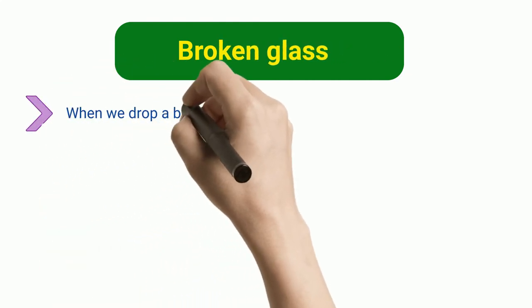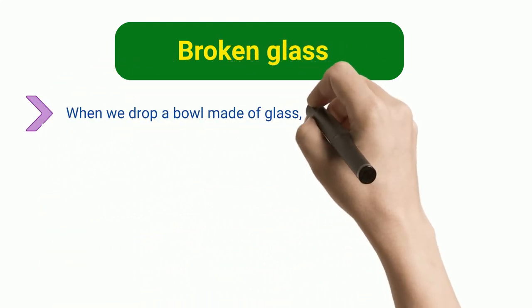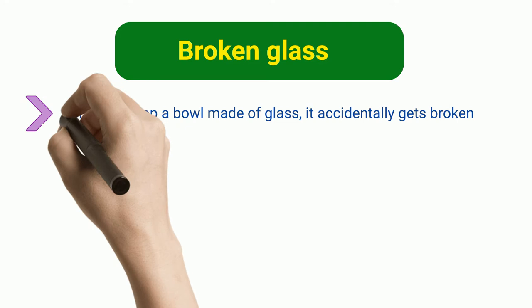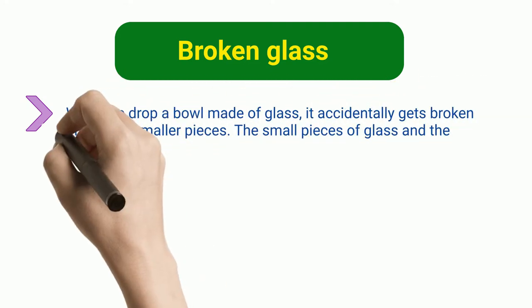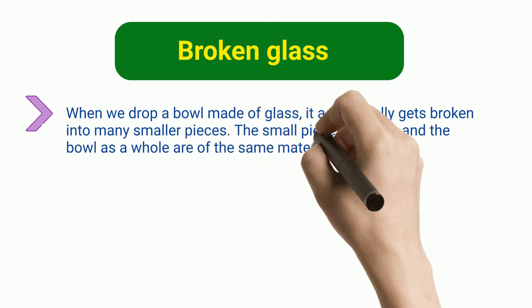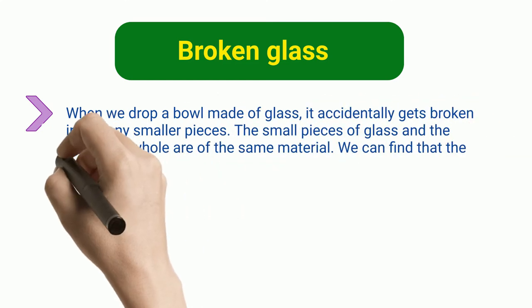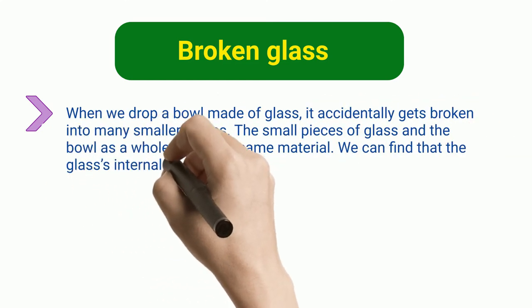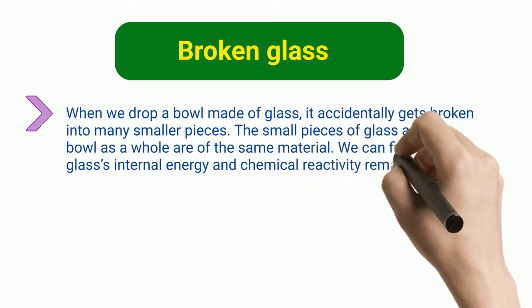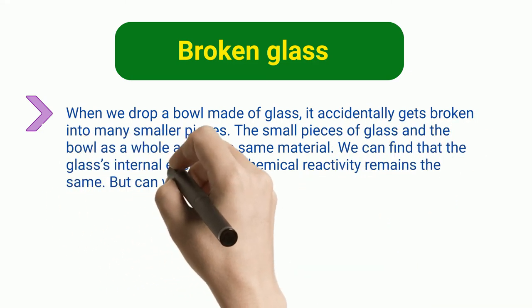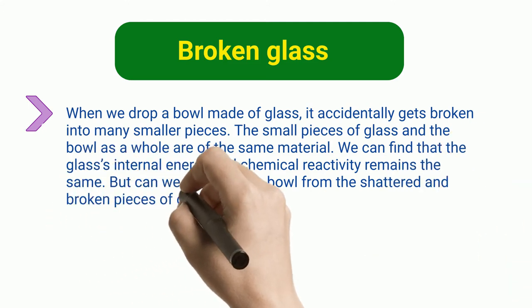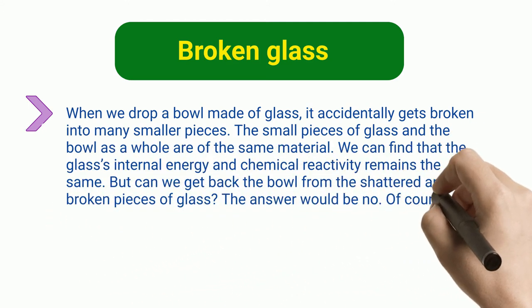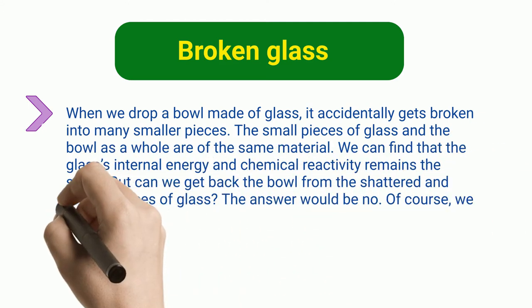Broken glass. When we drop a bowl made of glass, it accidentally gets broken into many smaller pieces. The small pieces of glass and the bowl as a whole are of the same material. We can find that the glass's internal energy and chemical reactivity remains the same. But can we get back the bowl from the shattered and broken pieces of glass? The answer would be no.